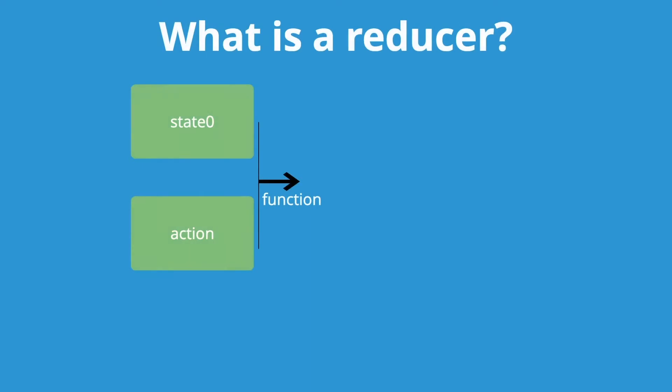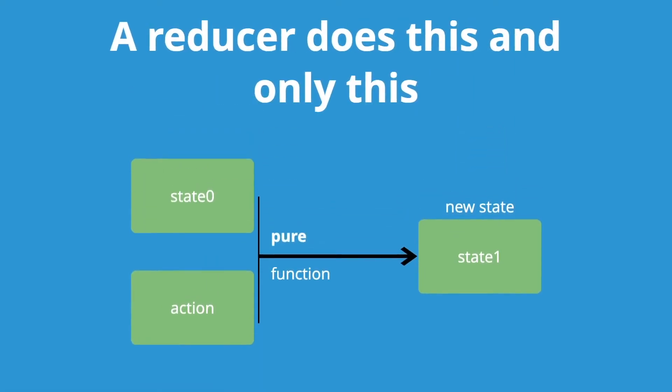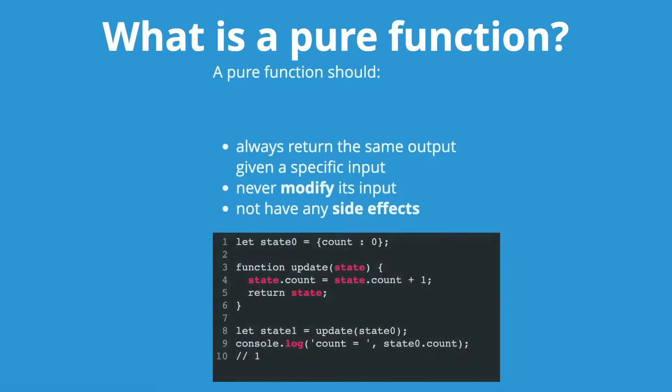Now the first question is: what is a Reducer? A Reducer takes a state and an action and produces a new state. The important thing to note is that a Reducer does this and only this.